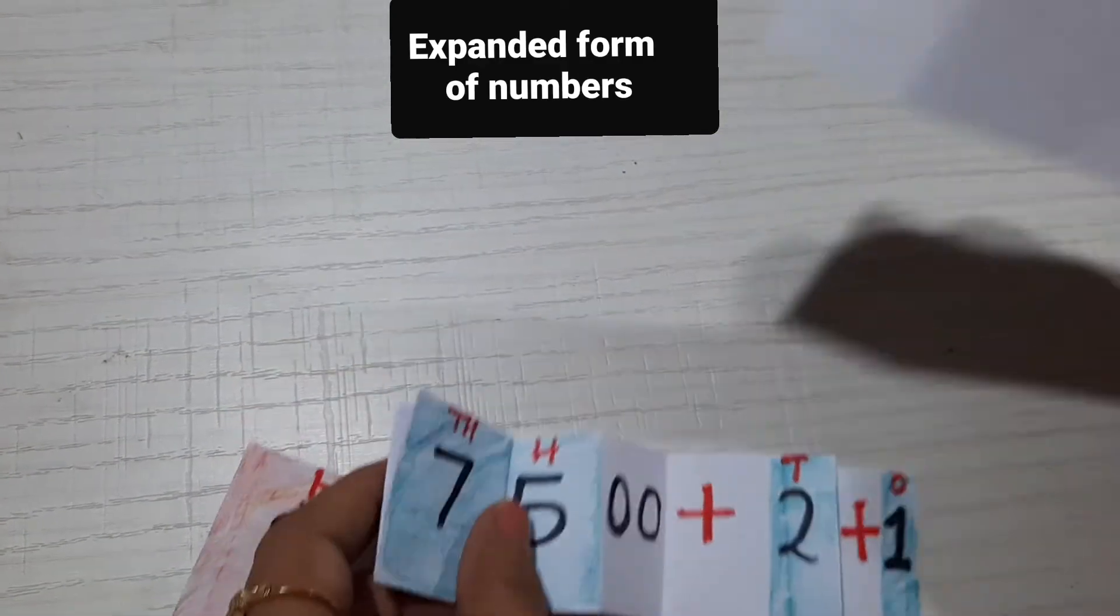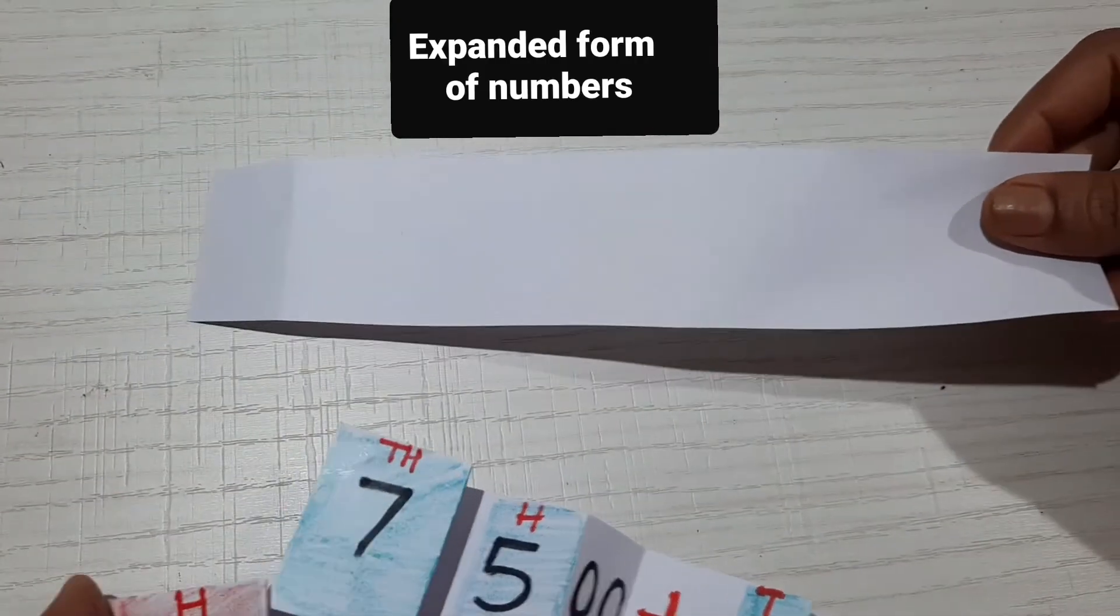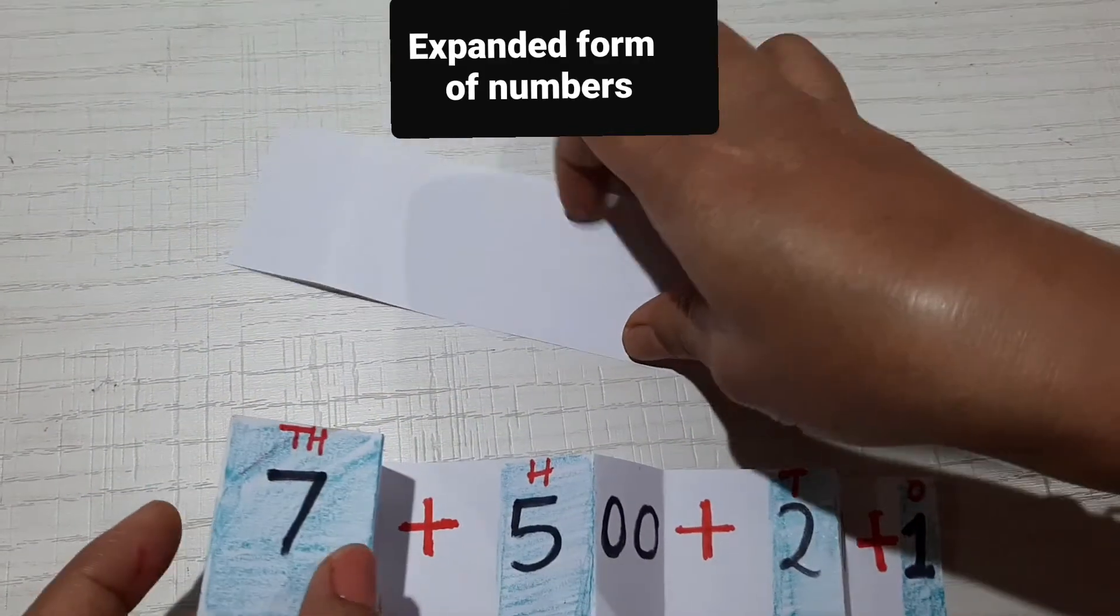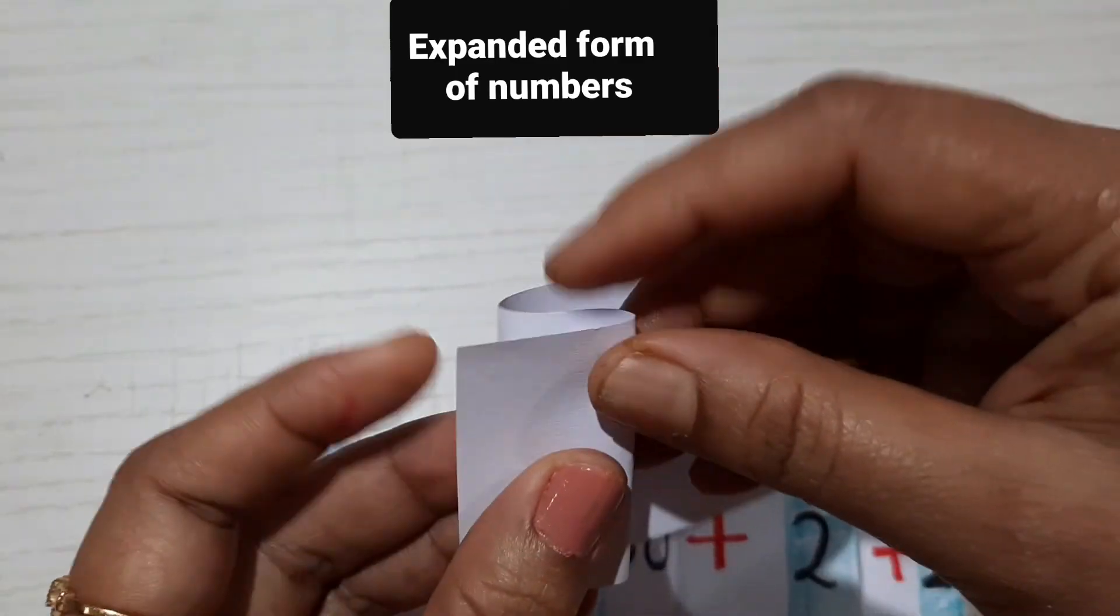Take a small piece of paper, any length. If you want to make it for four digits, see how I have folded it. I have done the first fold for the first place, like this.